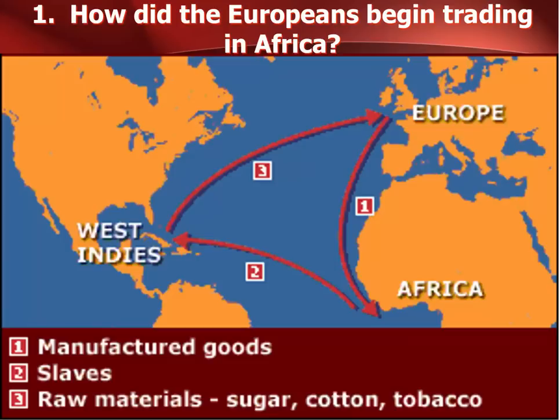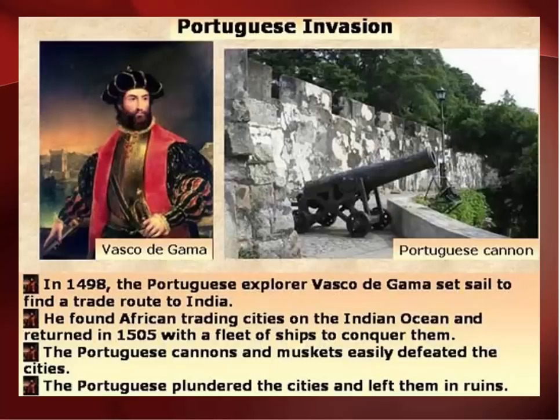However, the Europeans are going to expand it greatly, with a total of about 9 to 15 million Africans being taken off the continent and sent to other places forcefully as slaves. The Europeans who started the slave trade on the western coast of Africa would be the Portuguese. In 1498, Vasco da Gama set sail to find a trade route to India. They found African trading cities on the Indian Ocean and decided to try to conquer them. Because the Portuguese had better weapons, they were able to easily conquer these areas.